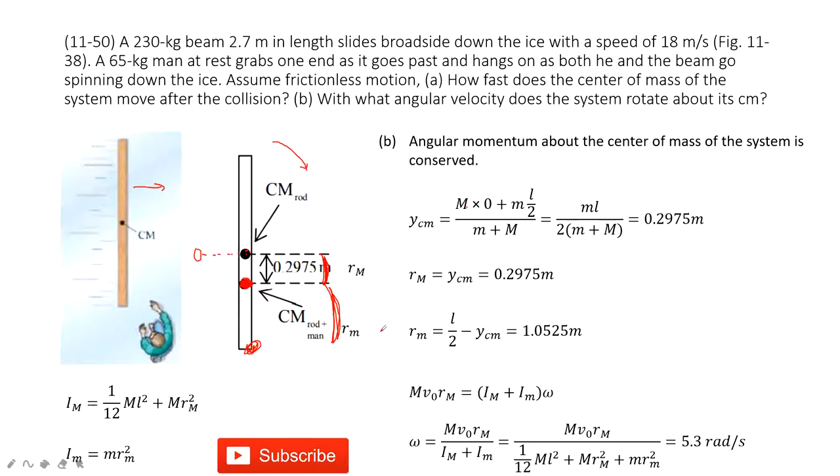So we apply angular momentum is conserved. Initial angular momentum: look at the stick. It has capital M, V naught, this is P. R P sine theta, sine 90 degrees. So M V naught times R capital M.